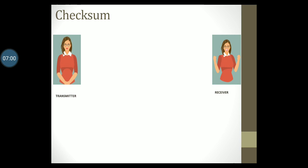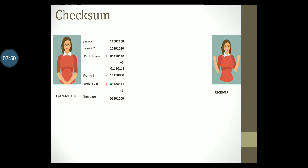Here is a very simple example just to illustrate how checksum works. You have a transmitter and there is a receiver. The transmitter wishes to transmit eight bits of data at a time. Let's call each block of eight bits as a frame. So there is frame one and there is frame two as well. The transmitter now adds the two frames together to get a partial sum. Any carry from the addition is added back to the partial sum and recalculated. There is also a frame three that the transmitter wishes to send. This is also added to the previous partial sum to get the new partial sum; any leftover carry is added back and the sum is recalculated. Now this final sum that is generated is called as the checksum.